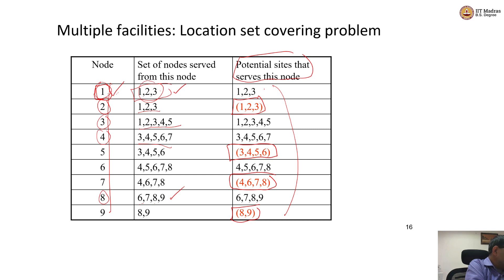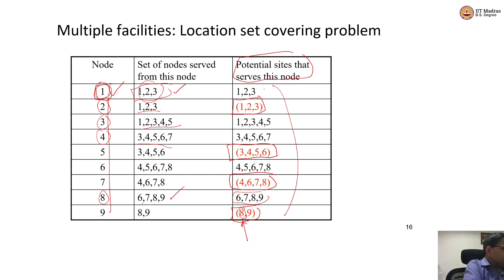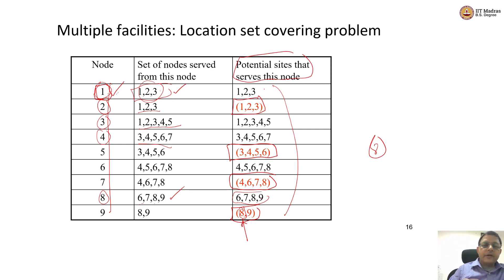Now, between the options, I definitely need to cover nodes 8 and 9. So let me pick a facility at node 8. Once I pick node 8, it will serve nodes 6, 7, 8, and 9 — so those four nodes are done. Node 9 is already covered by having a facility at node 8. Do I want a facility at node 7? No, because the facility at node 8 already covers node 7. The facility at node 8 also covers node 6. All of nodes 6, 7, 8, and 9 are done.